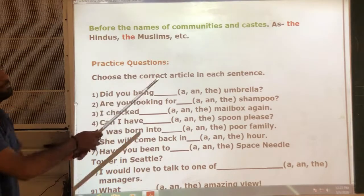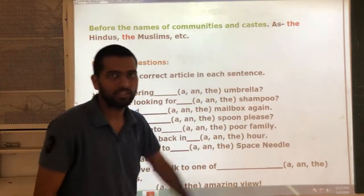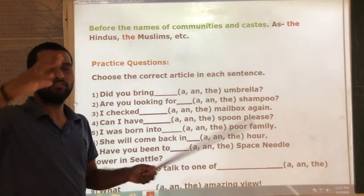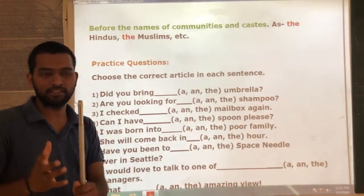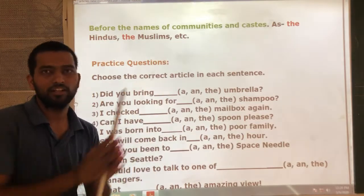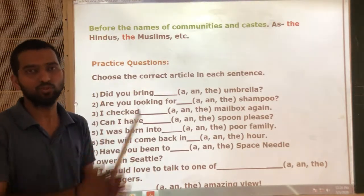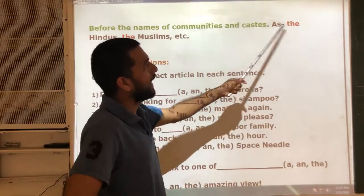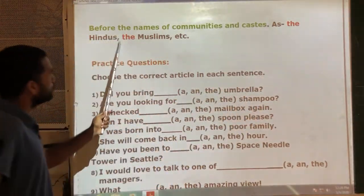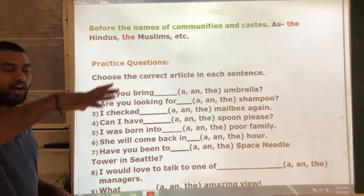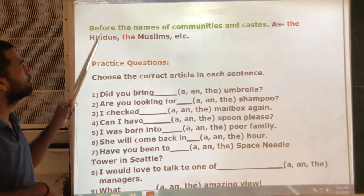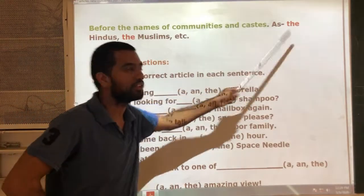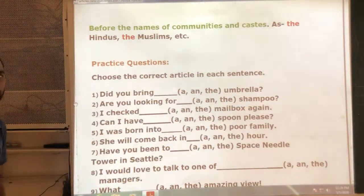Next rule: use 'the' before names of communities and castes. A community means a particular group of people who belong to or refer to that community. For example: 'the Hindus' — meaning all the Hindus who belong to the Hindu community. When these types of words referring to communities are used, 'the' is applied. Similarly, 'the Muslims', etc.